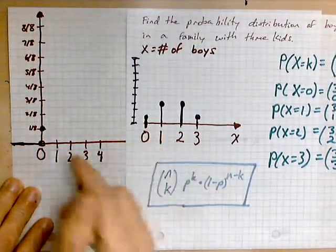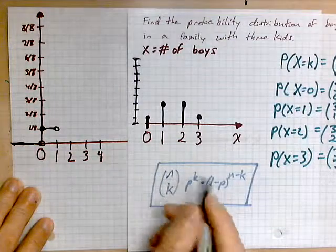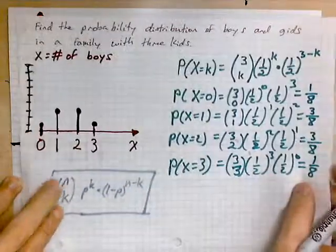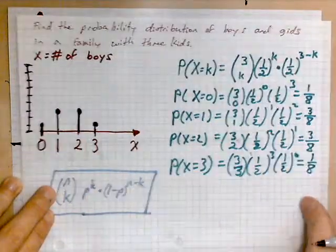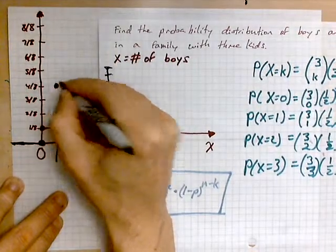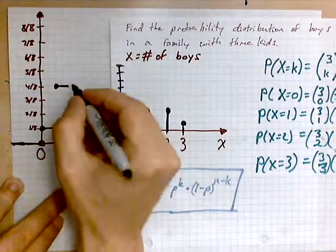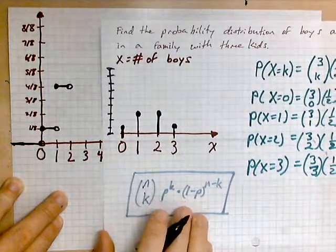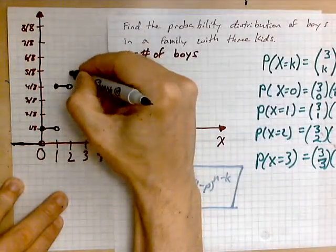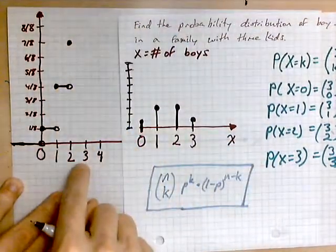From zero up through one there are no other jumps, so we draw a steady horizontal line over to one and mark a hole there. At one, looking at the table, there is a jump of three-eighths, so we count up three units and mark a solid dot. Then draw a line over to two, where there is another jump of three-eighths — count up three more and mark a solid dot.